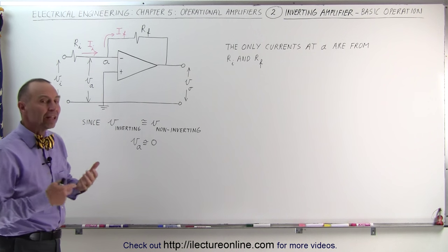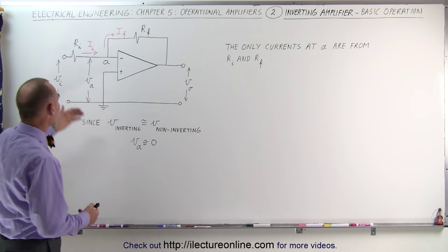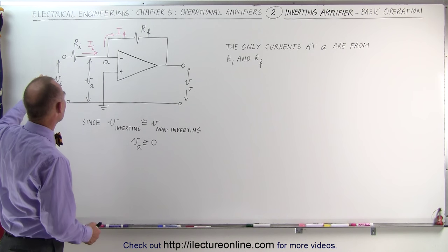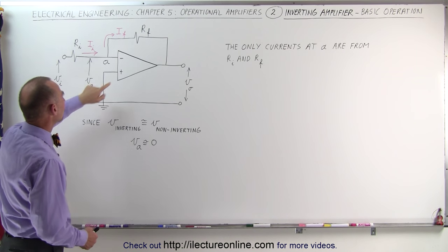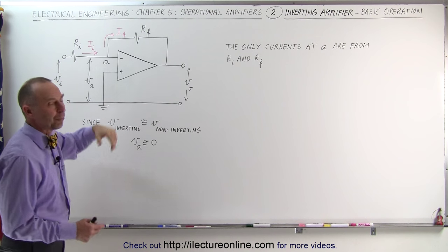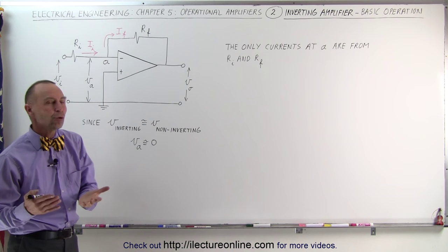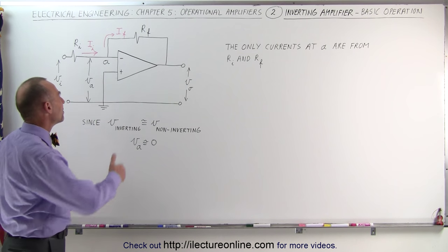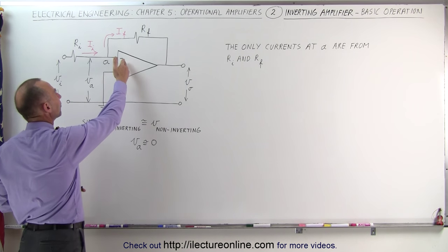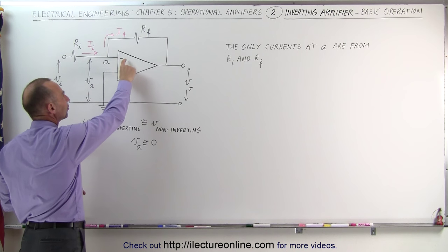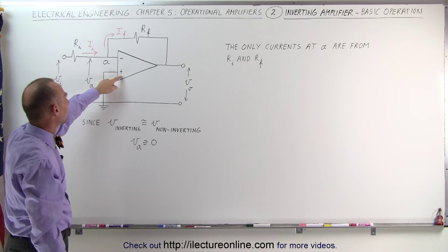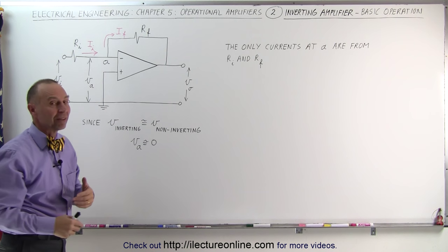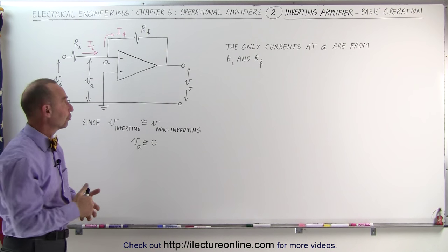To make it easy, let's assume to start off with that this is a positive input voltage. Also notice that the negative and plus signs here have really nothing to do with the polarity of the input voltage or the output voltage. The negative simply means that's the inverting terminal and the plus simply means that's the non-inverting terminal.